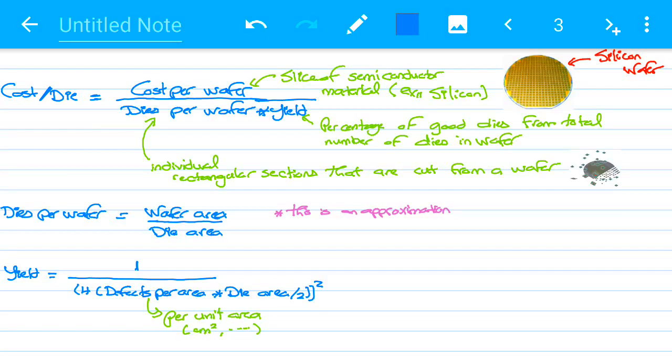In the beginning we have the basic rule for calculating the cost per die. The cost per die we're really interested in calculating is the cost per wafer over dies per wafer times yield.